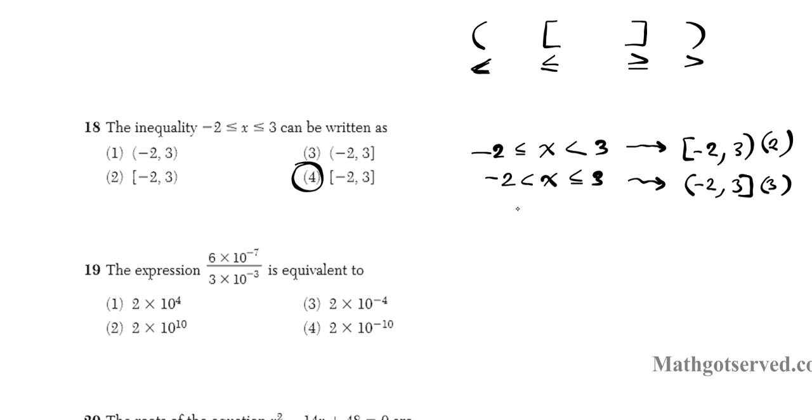And then another situation that we have is both of the two endpoints are excluded from the domain. So you have no lines. If you have no lines, that basically means we have parenthesis. In that case, we will have -2 parenthesis, -2 comma 3 parenthesis. And that's going to be option one. So we can clearly see that since we have lines in both inequalities, we must have two brackets in our interval notation. Now actually this is called set builder notation. This is interval and this is set builder.